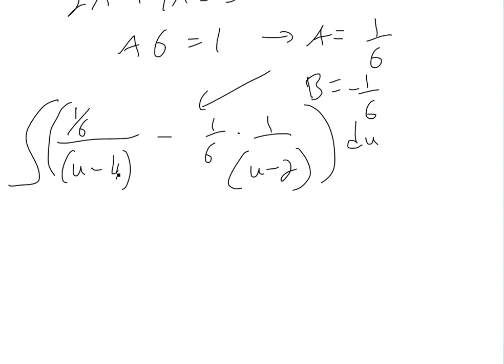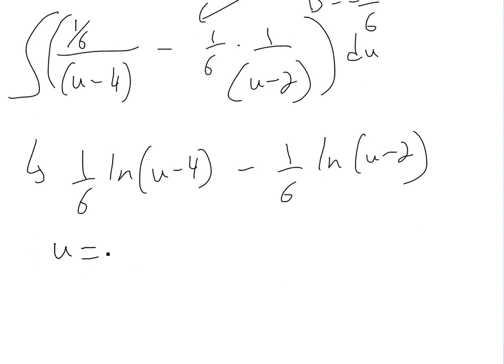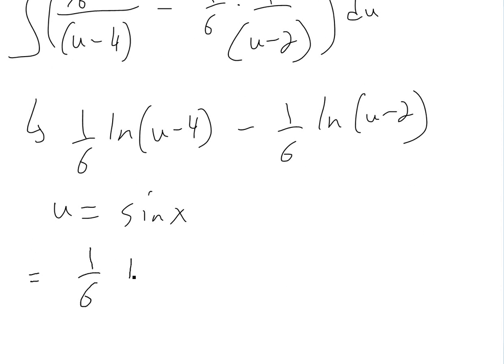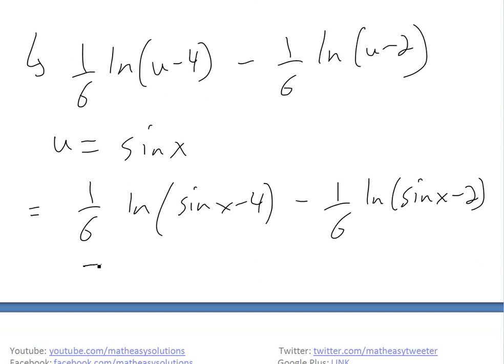So now we can actually do the anti-derivative or integral. It's going to be 1 over 6 ln of u minus 4 minus 1 over 6 ln of u plus 2. Then we plug back, u is equal to sine of x. The final answer is going to be 1 over 6 ln sine of x minus 4 minus 1 over 6 ln sine of x minus 2. So we use partial fractions and whatnot to get the final answer to this one.